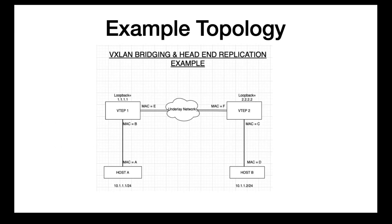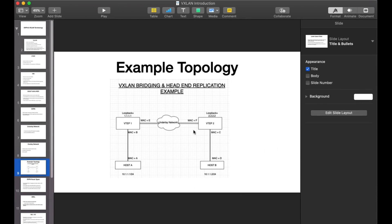Now let's take a look at an example topology. I'll talk about a simple VXLAN bridging scenario. On the left-hand side of the screen, you see host A and VTEP1. These two devices are members of the same LAN, 10.1.1.0. Host A has an IP address of .1 and host B has an IP address of .253. On the right-hand side, you have the same IP subnet — the same LAN essentially separated by a Layer 3 network — with an IP address of 10.1.1.2 and a default gateway of 10.1.1.251.